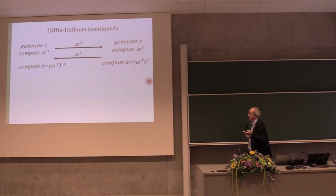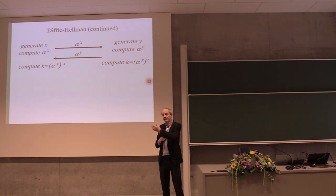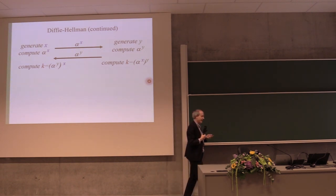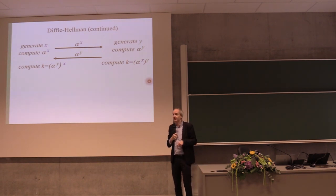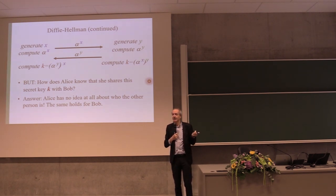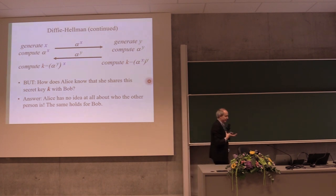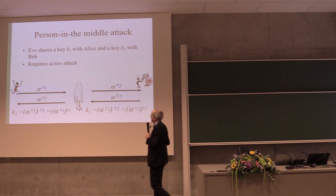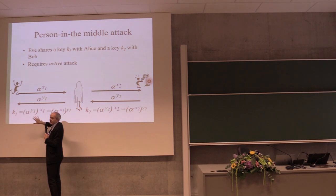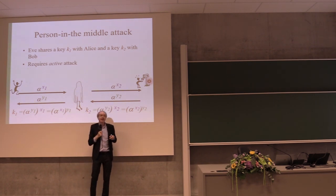Rivest, Shamir, and Adleman got the Turing Award in 2002 for RSA. Diffie and Hellman only got the Turing Award a couple of years ago. Diffie-Hellman sounds fantastic — Alice and Bob just exchange something and share a key — but how does Alice know she shares the key with Bob? The answer is she doesn't. You share a key with somebody but don't know who it is. This is exemplified by the person-in-the-middle attack: the NSA sits in the middle, Alice runs Diffie-Hellman with the NSA on one side, the NSA runs it with Bob on the other. Alice and NSA share a secret key; NSA and Bob share a secret key.